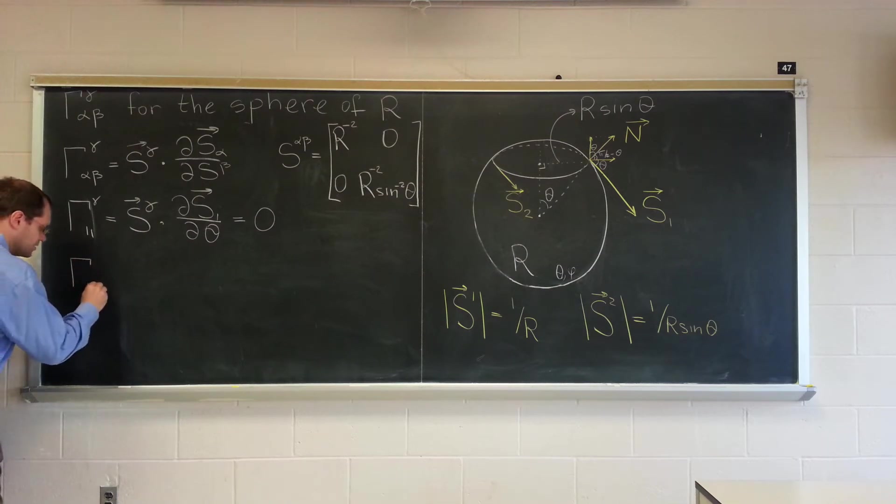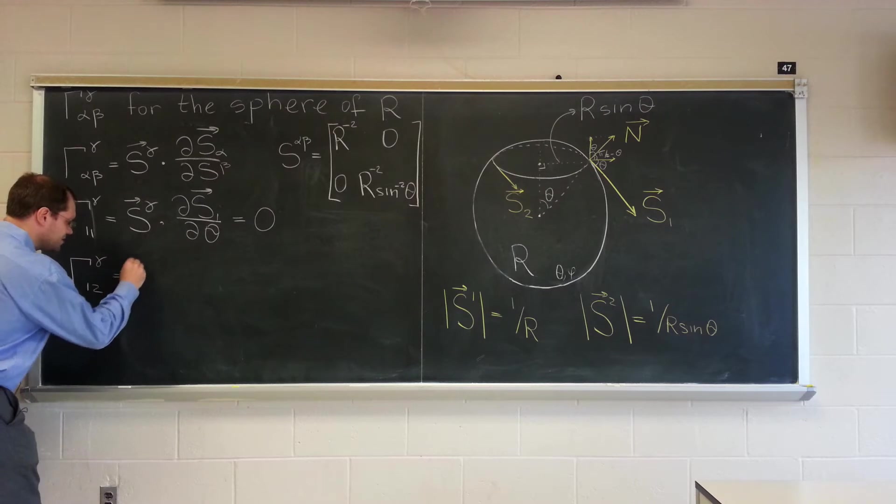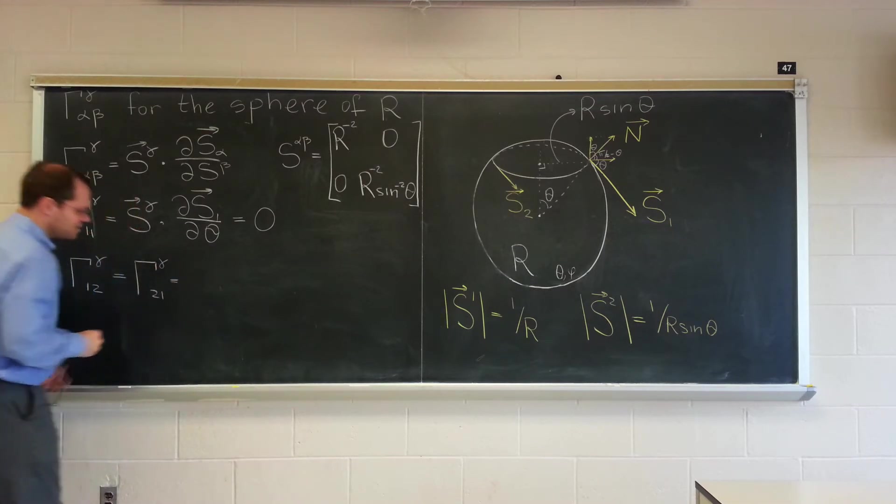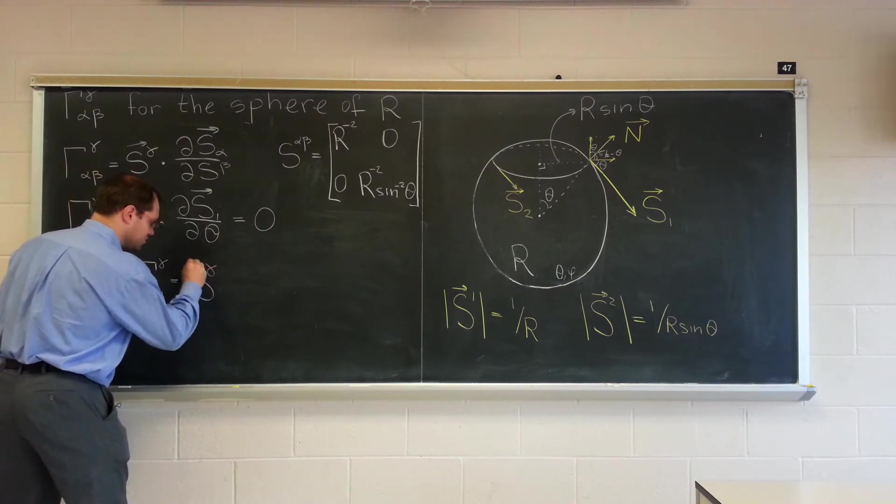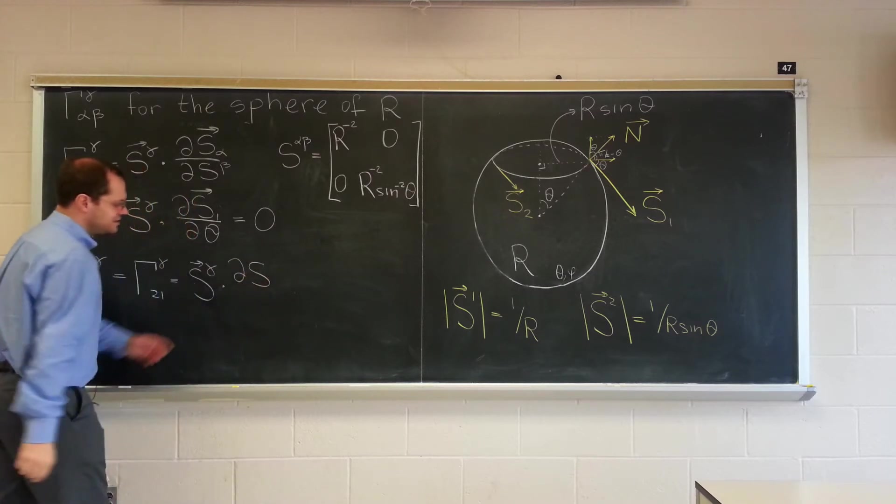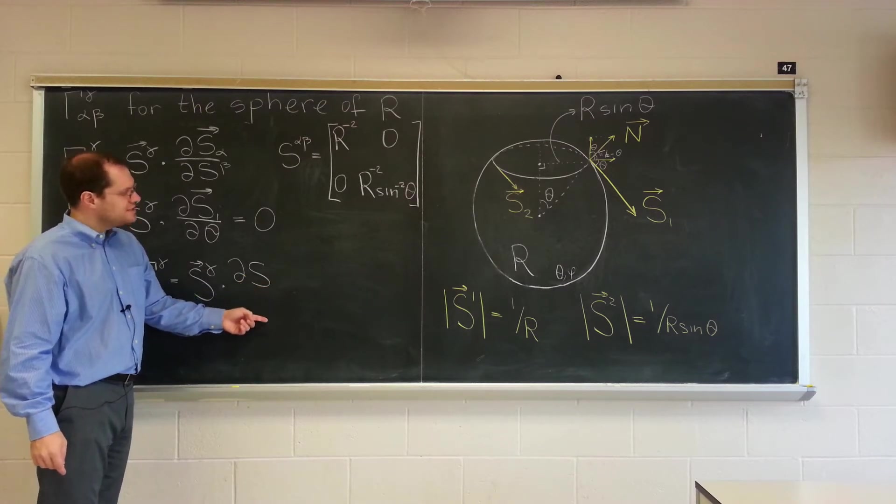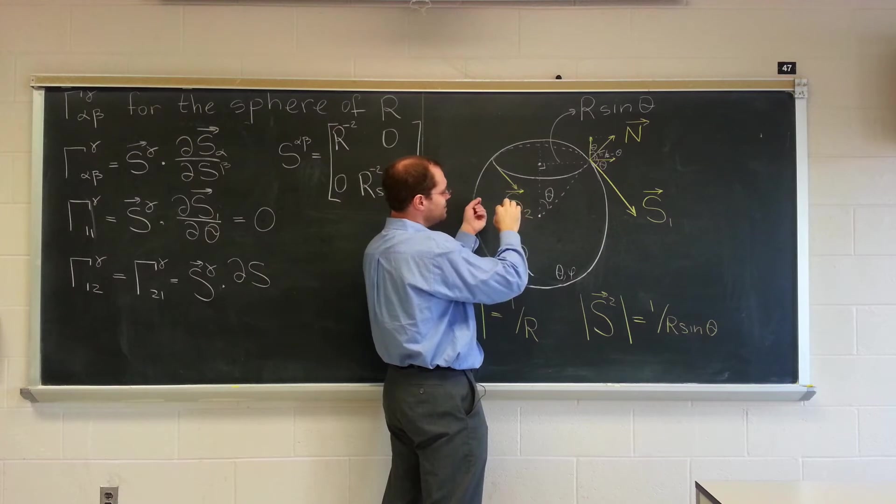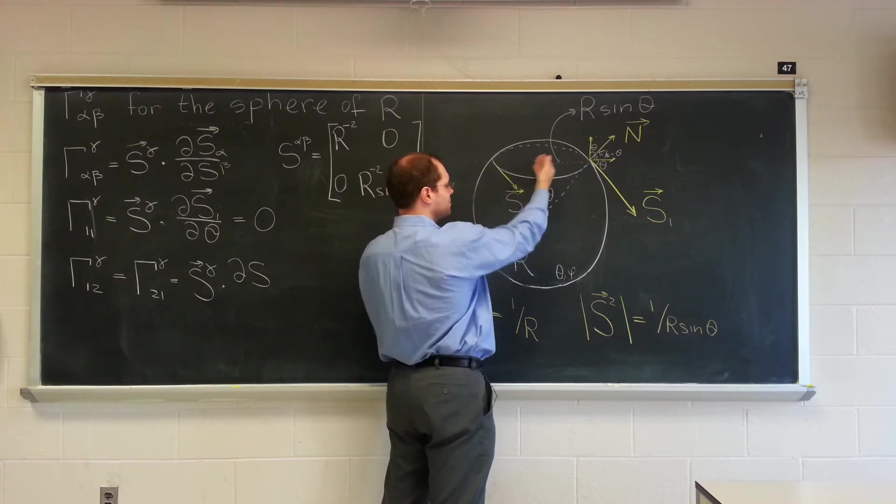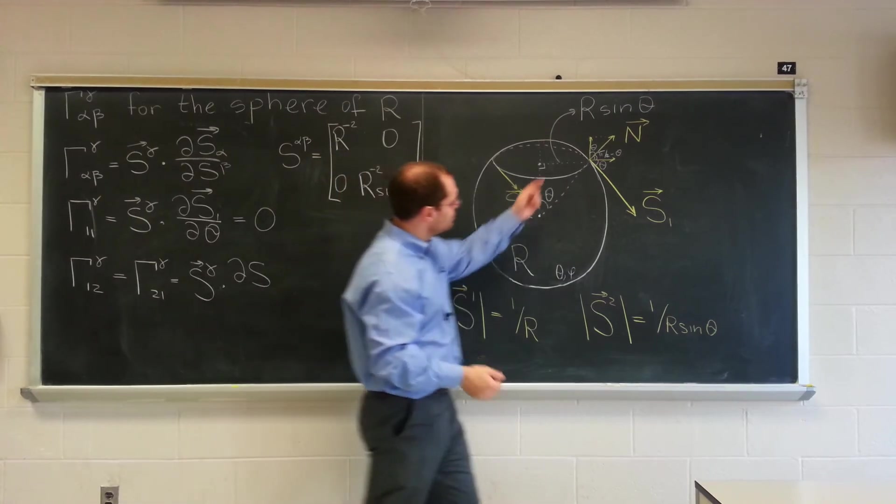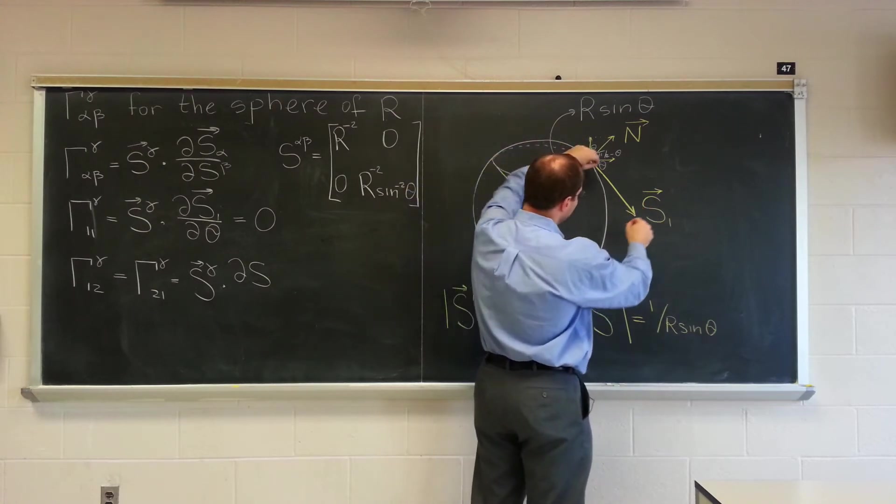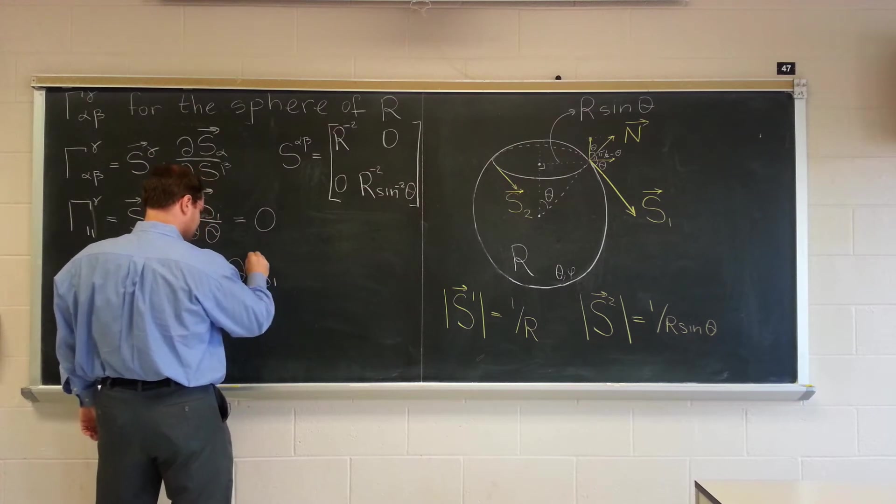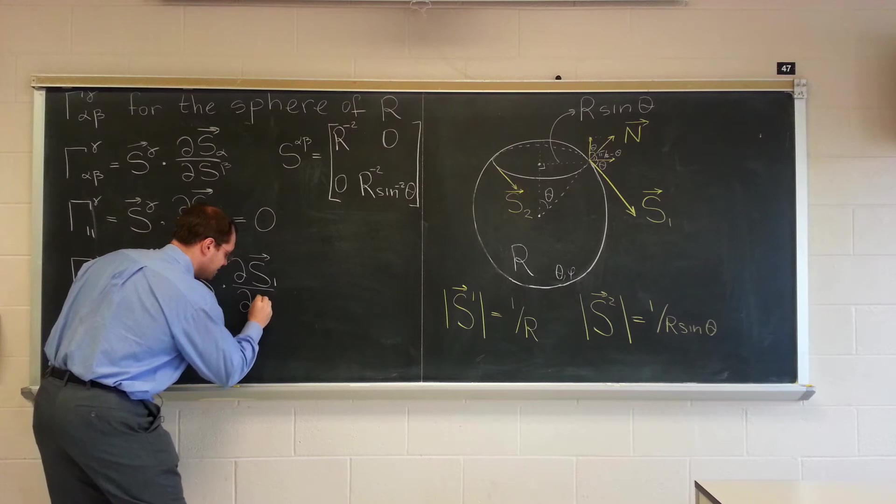This vector is orthogonal to the tangent plane, so when dotted with either S1 or S2, the answer is zero. Let's switch to gamma 1, 1, 2, which of course will be the same as gamma 1, 2, 1, by symmetry. I intend to fill that gap at some point. This will be S gamma 1 or 2 dotted with D S. We can either do D S1 D phi or D S2 D theta. D S2 D theta is how this vector changes as we go down. It keeps pointing in the same direction but growing because sine of theta is growing. That seems difficult to visualize. So let's think about S1 changing as a function of phi.